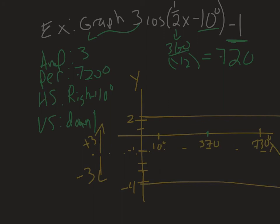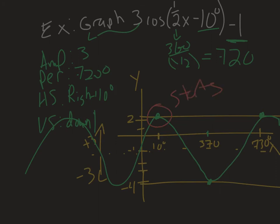Cosine starts at its peak, so I know it starts at the top line at 10 degrees, reaches its valley at 370 degrees, and returns to the peak at 730 degrees. So I can fill in the graph and it continues in this manner. All the things from sine carry over to cosine — amplitude, period, horizontal shift, vertical shift all work the same. The only difference is where it starts: cosine starts at its peak, sine starts at the midline.